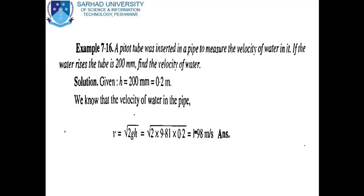We know that the velocity of water in the pipe is v = √(2gh), which is the Pitot tube equation. Here, g = 9.81 and h = 0.2. Solving this, we get v = √(2 × 9.81 × 0.2) = 1.98 m/s. This is the answer for Example 7.16.